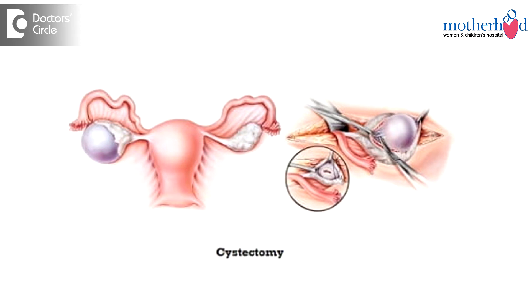And why do we do cystectomy? Because we want to conserve the ovary. So we just remove the portion which is abnormal, which is encapsulated, which is like a balloon filled with water or whatever content it is. We remove that.